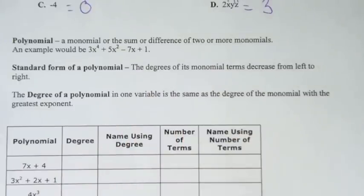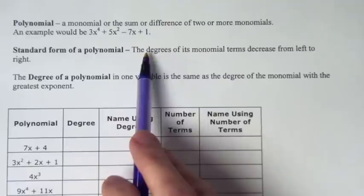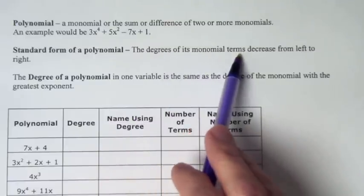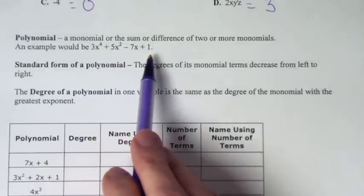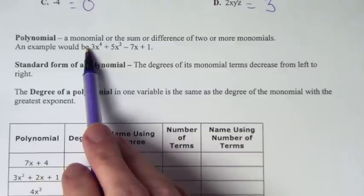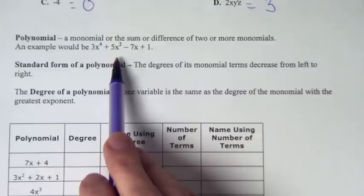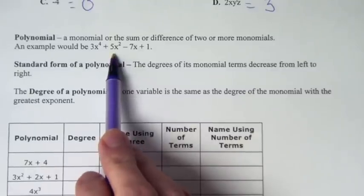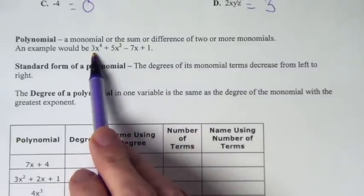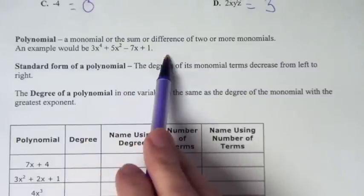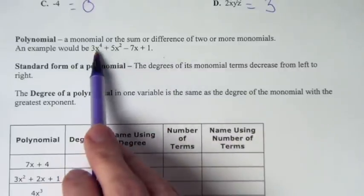When we write a polynomial, we want to write it in standard form. Standard form is where the degrees of its monomial terms decrease from left to right. Each monomial has a degree, and they're listed in greatest to least. So the degree on 3x to the 4th is 4, this one is 2, this one is 1, and this one is 0. They're listed in order from greatest to least, from left to right, so the monomial with the greatest degree comes first.